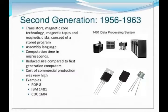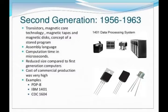Second generation of computers: duration of second generation is 1956 to 1963. The major invention of this generation was the transistor, which was used in place of the vacuum tube. These transistors were very small in size compared to the vacuum tube and generated less heat. By using transistors, the size of the computer was reduced and efficiency was increased.